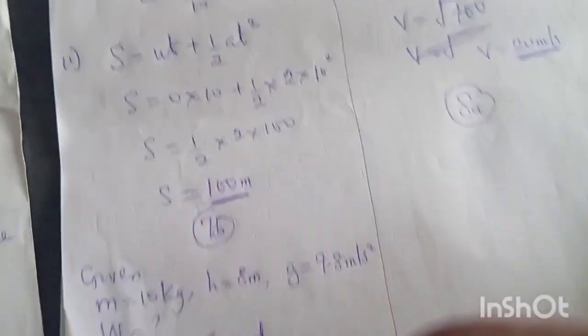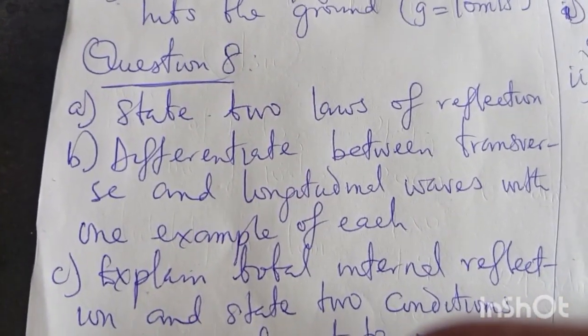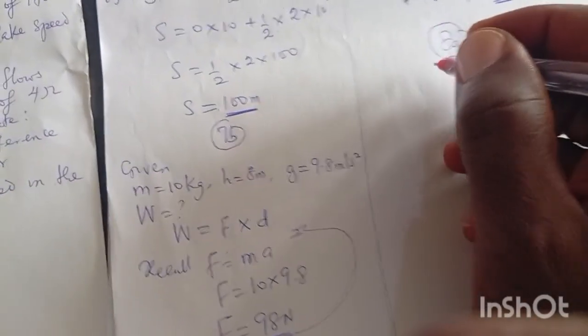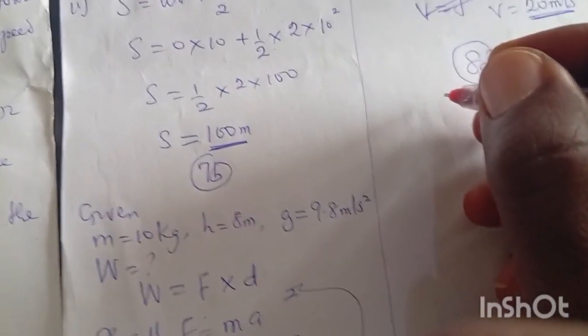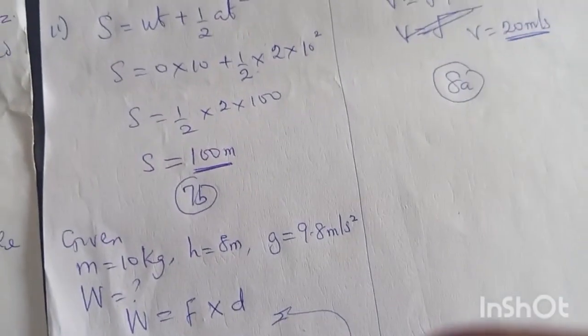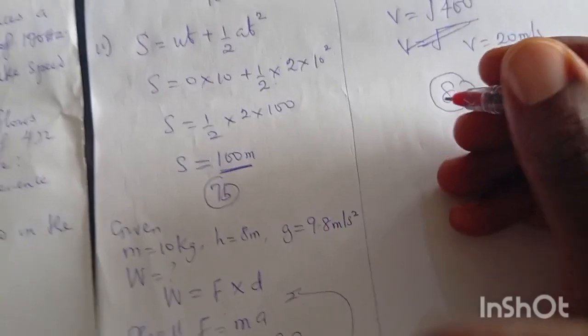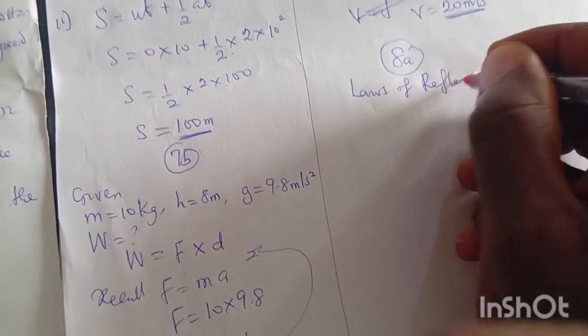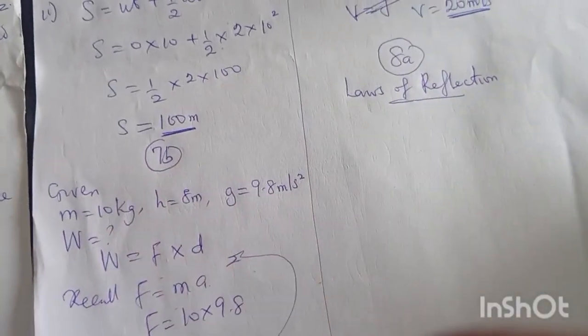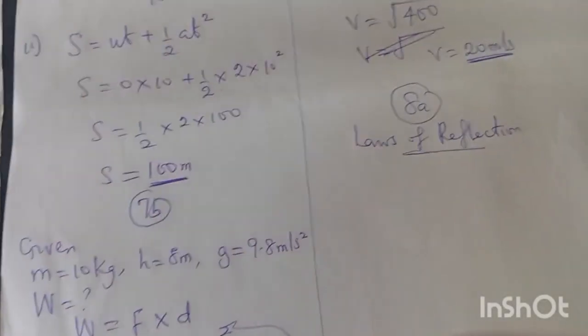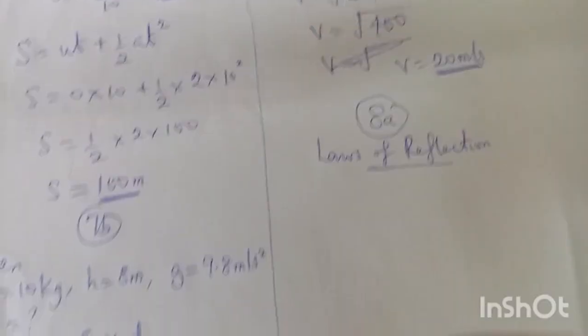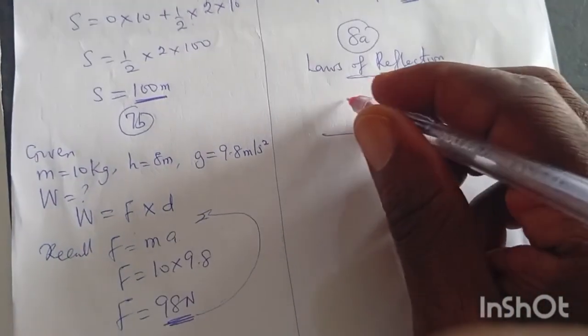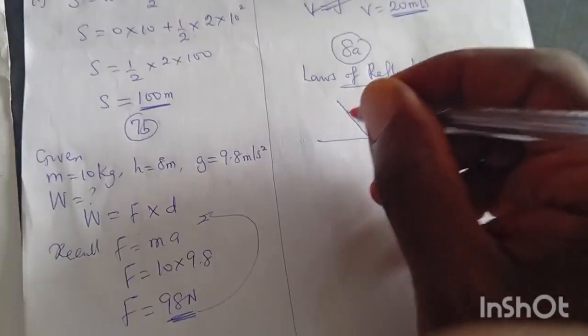Now let's go to question number eight. Question 8a says: state two laws of reflection. We're talking about reflection — please watch our video on light waves, reflection of light, and mirrors to get this content very well. When we talk about the laws of reflection, a mirror diagram can best show what reflection is all about.